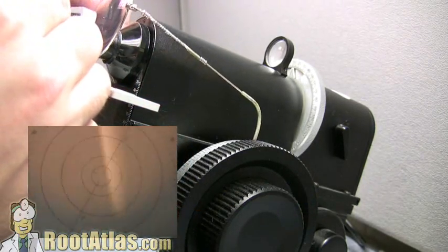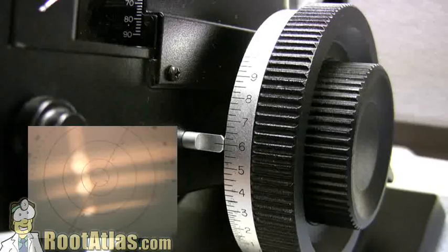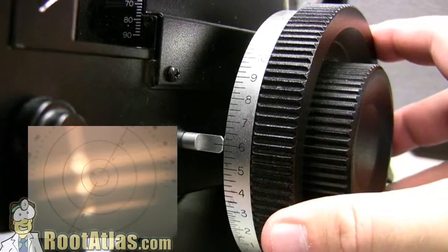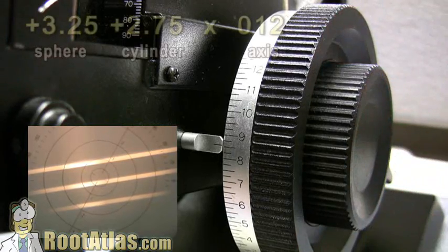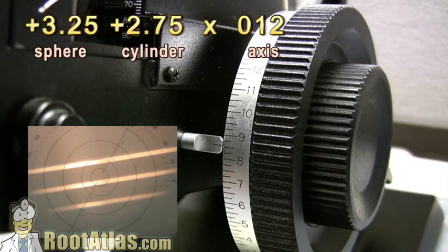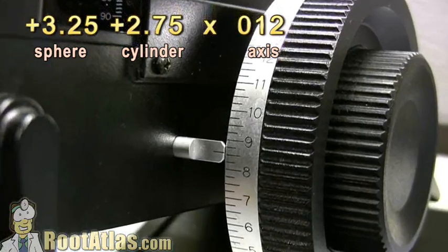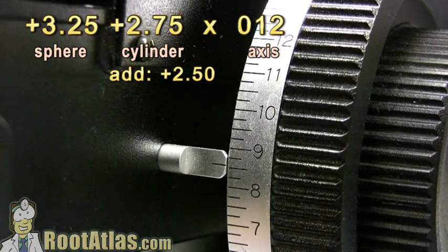Now to get the bifocal power, you need to move the glasses up to the bifocal segment and see how much you need to change it to get those three fat lines in focus again. So we went from plus 6 to plus 8.5, meaning our add is plus 2.5.